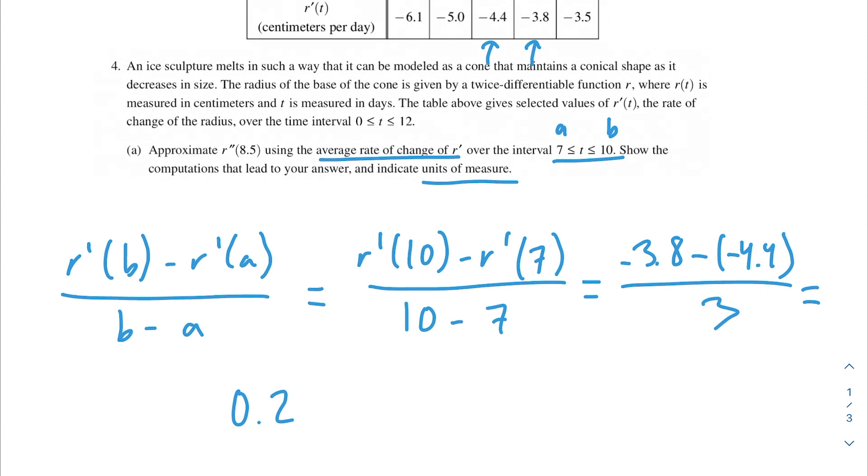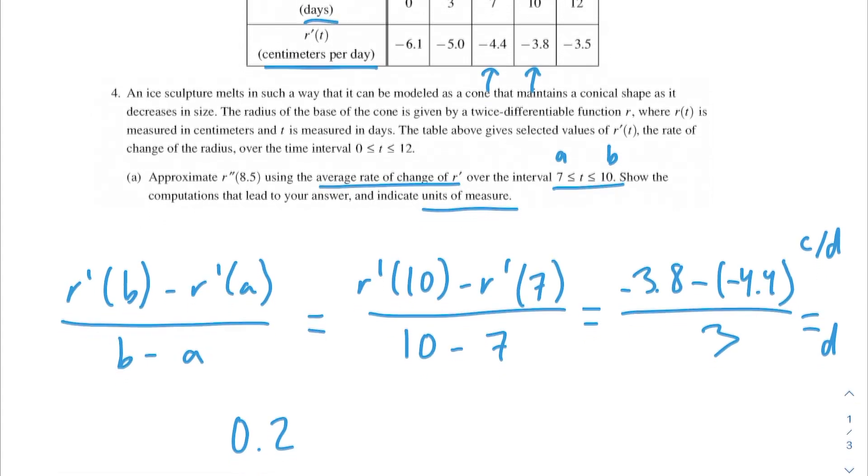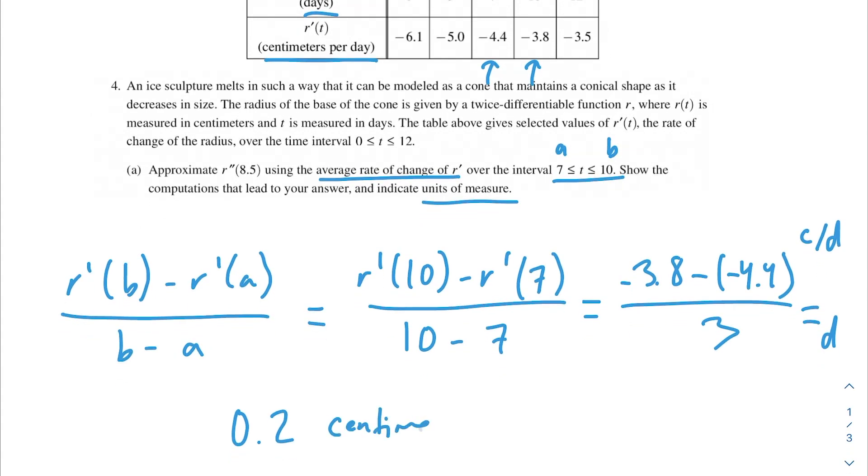And remember that we need to indicate units of measure. So one way that I like to do this that is sort of simple is what are the units up top? Well, we're given that r'(t) is in centimeters per day. So centimeters per day up here, and then we're dividing it over our t, which is in days. So this is going to be in centimeters per day, and then per day again, because we're dividing it by days again. This is our final answer for part a.